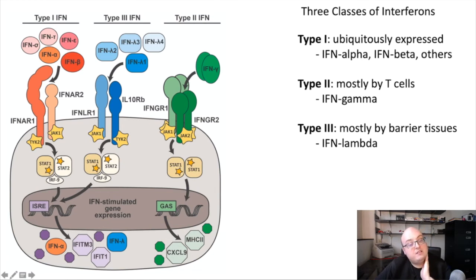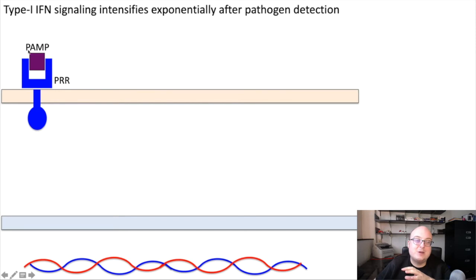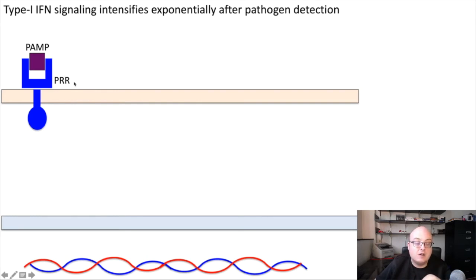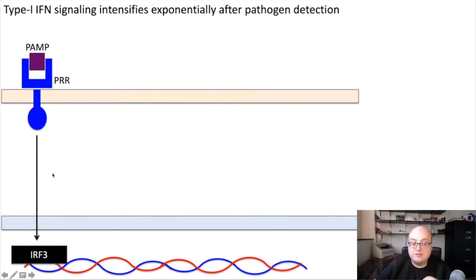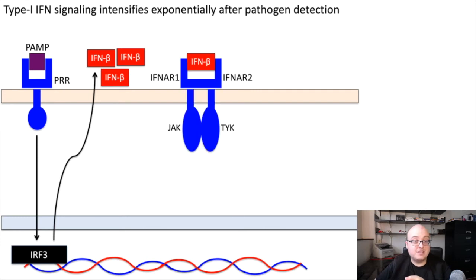One thing that's unique about interferon, particularly type 1 interferon, is that it can amplify itself exponentially following an infection. Basically all the innate cytokines, and certainly interferon, are activated downstream of pattern recognition receptors. If you remember, we talked about PAMPs — pathogen-associated molecular patterns — and we're sensing a virus or some non-self entity activating a PRR. Sensing of viruses by PRRs is going to induce a transcription factor called IRF3, or interferon regulatory factor 3. This transcription factor is going to induce the expression of interferon beta, which is then going to bind to the type 1 interferon receptor, IFNAR.